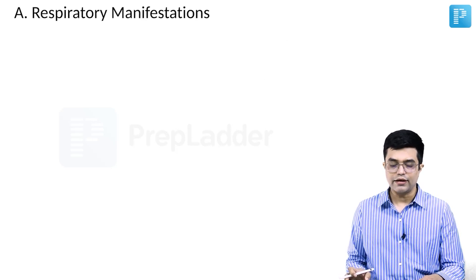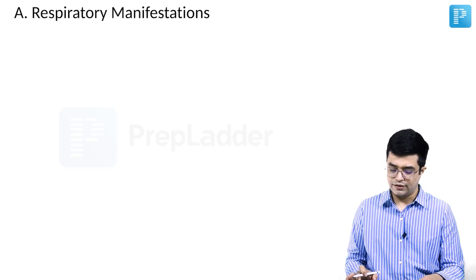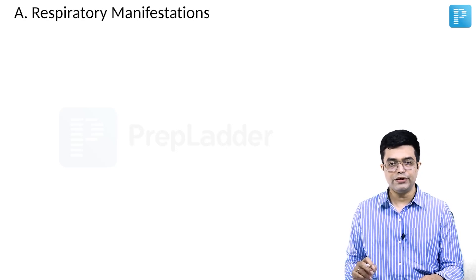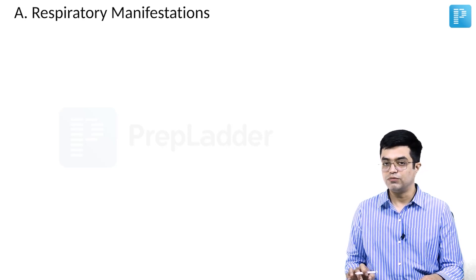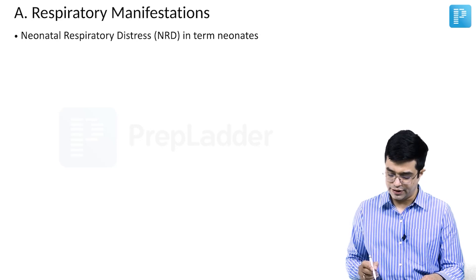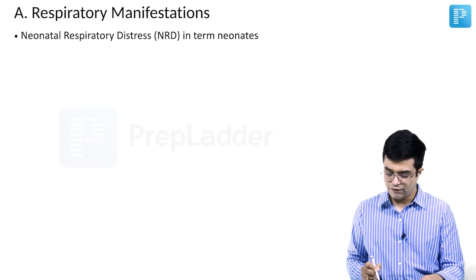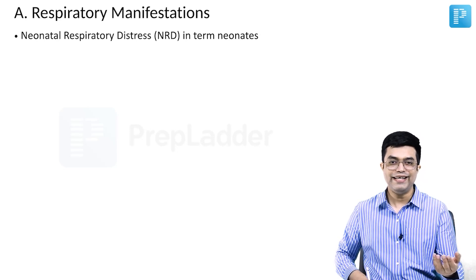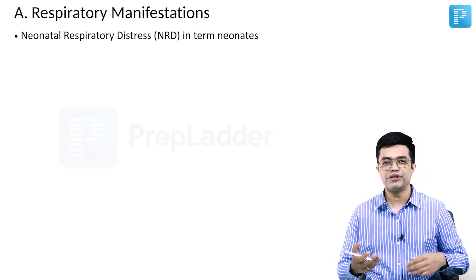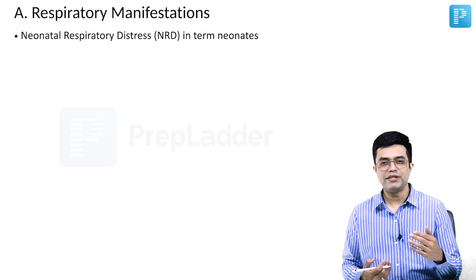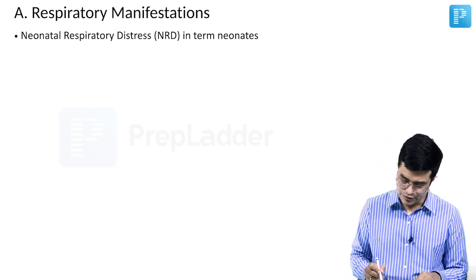The first are the respiratory manifestations. They will begin in the neonatal period. A particularly common manifestation in term newborns will be neonatal respiratory distress, NRD. You will find that it will resemble patients of TTN — transient tachypnea of the newborn — so there will be tachypnea in the patient.